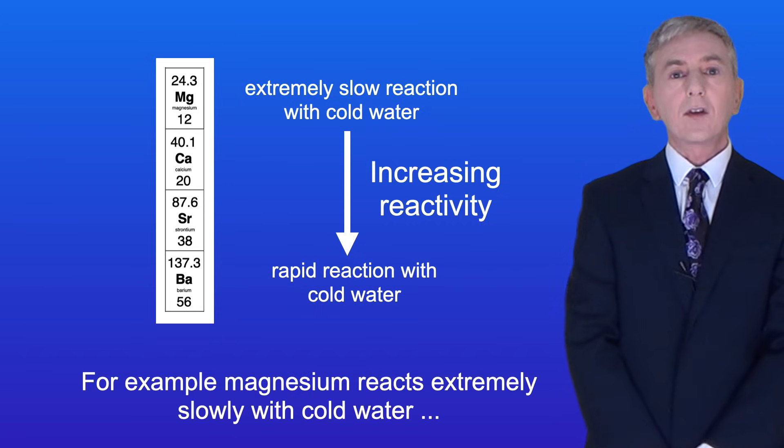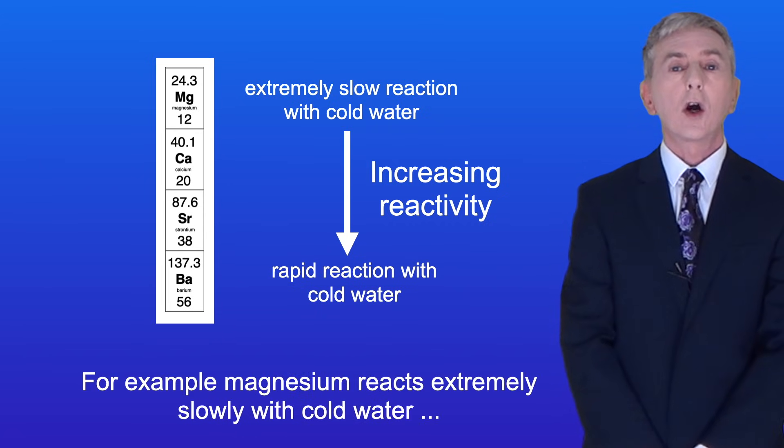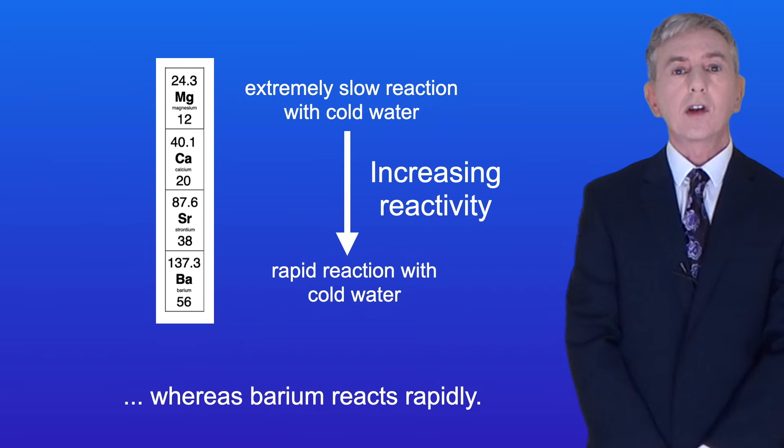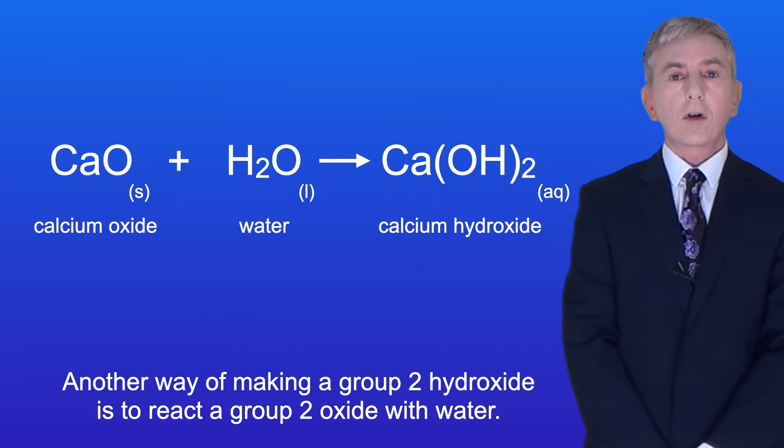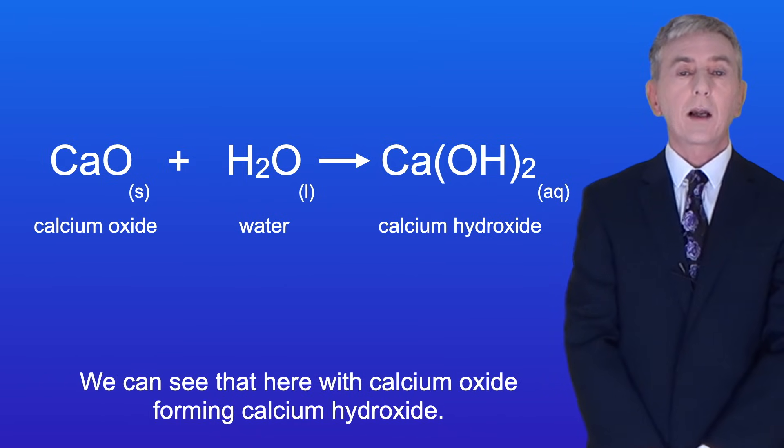For example, magnesium reacts extremely slowly with cold water, whereas barium reacts rapidly. Another way of making a group 2 hydroxide is to react a group 2 oxide with water. We can see that here with calcium oxide forming calcium hydroxide.